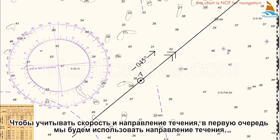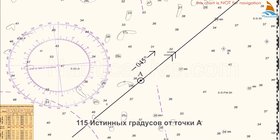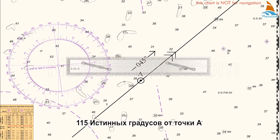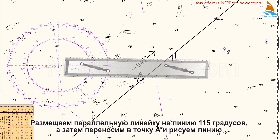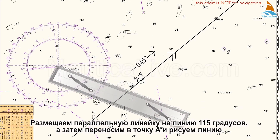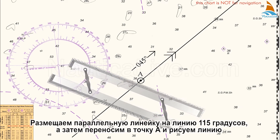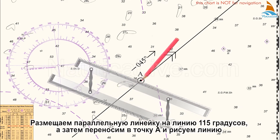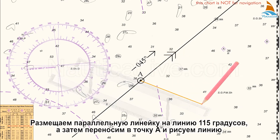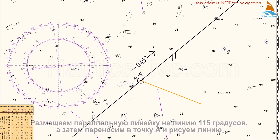To allow for set and drift of the tide, firstly we'll apply the tidal set of 115 true degrees from point A. We place the parallel ruler on the 115 degree line on the compass rose and then transfer to point A and draw a line.